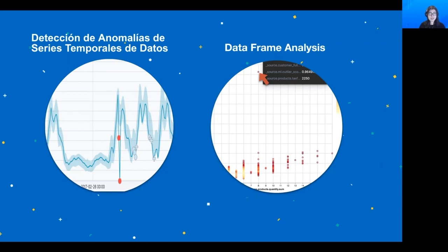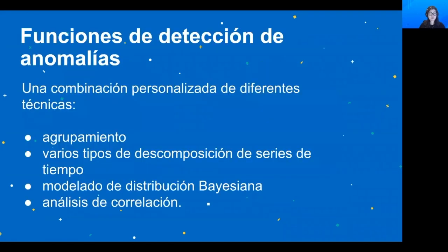Después voy a hablar un poco más sobre los DataFrames. Las funciones de Machine Learning para detección de anomalías utilizan una combinación de diferentes técnicas como agrupamiento, varios tipos de descomposición de series de tiempo, modelado de distribución bayesiana y análisis de correlación. Si quieren, pueden encontrar más información en la documentación de Elastic.